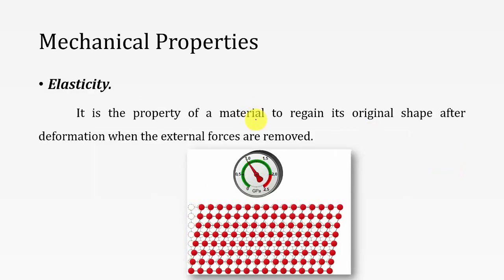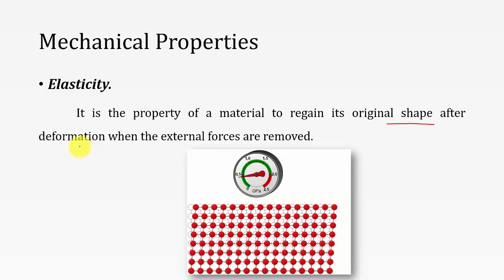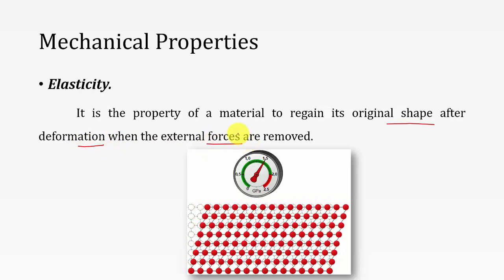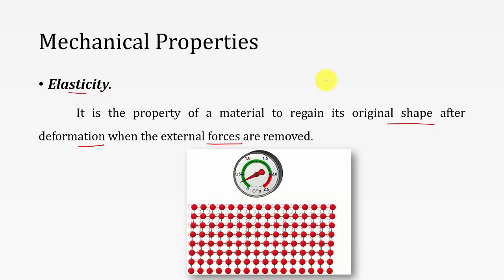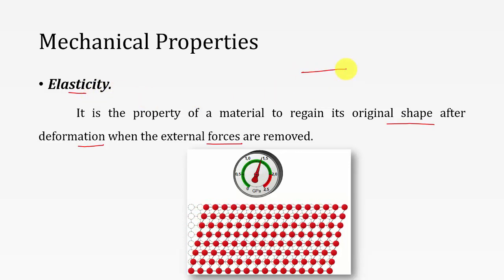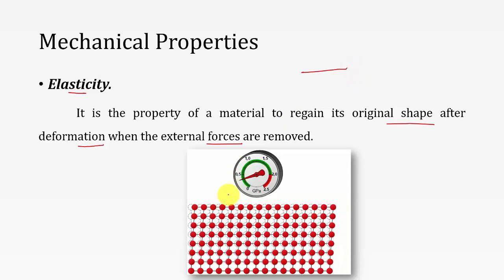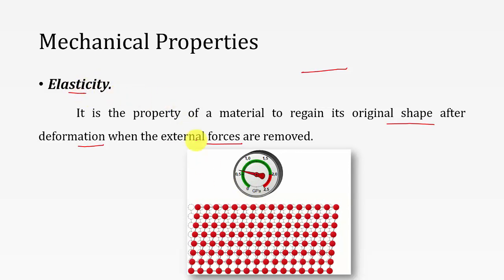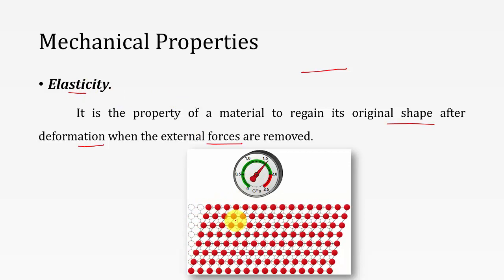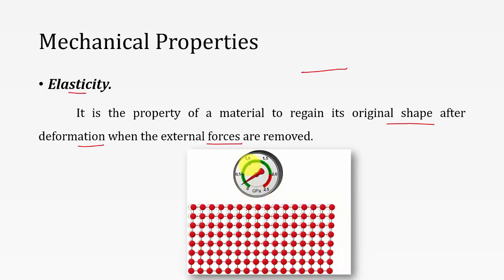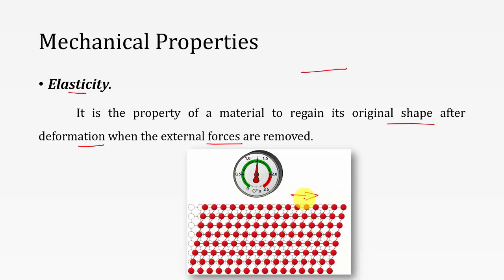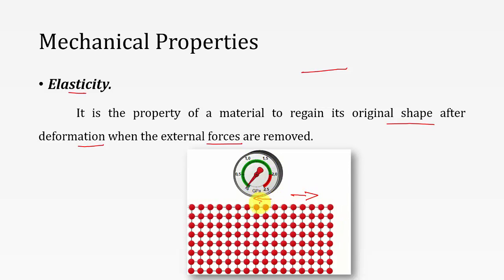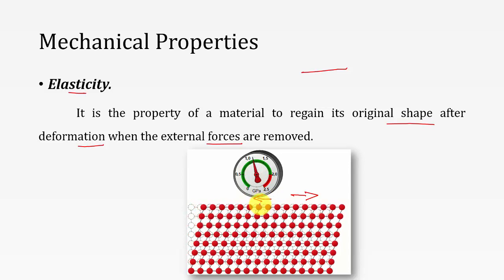Elasticity is the property of the metal to come to its original shape after deformation when the external forces are removed. Just remember your elastic band — when you apply the load it deforms, and once after removing the load it comes back to its original position. You can see this in the animation where the load is applied, the material deforms, and once removed it returns to its original position.